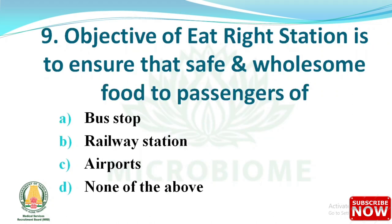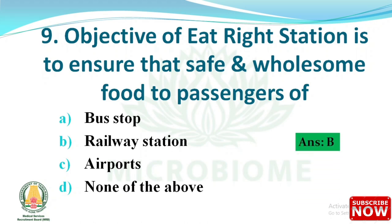Next question: the objective of Eat Right Station is to ensure safe and wholesome food to passengers at — options: (A) bus stop, (B) railway station, (C) bus stop and airports, (D) none of the above. The right answer is option B, railway station.